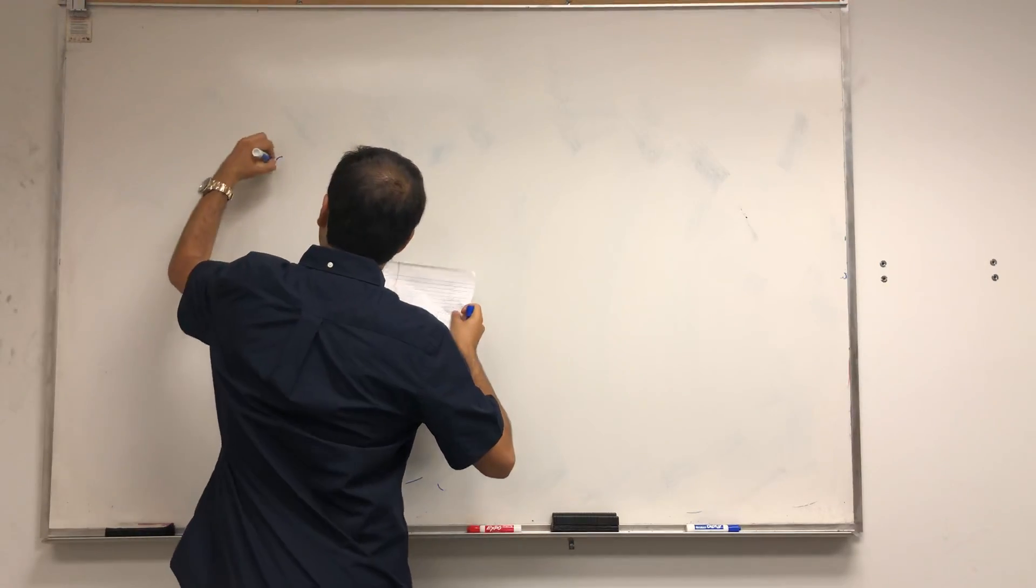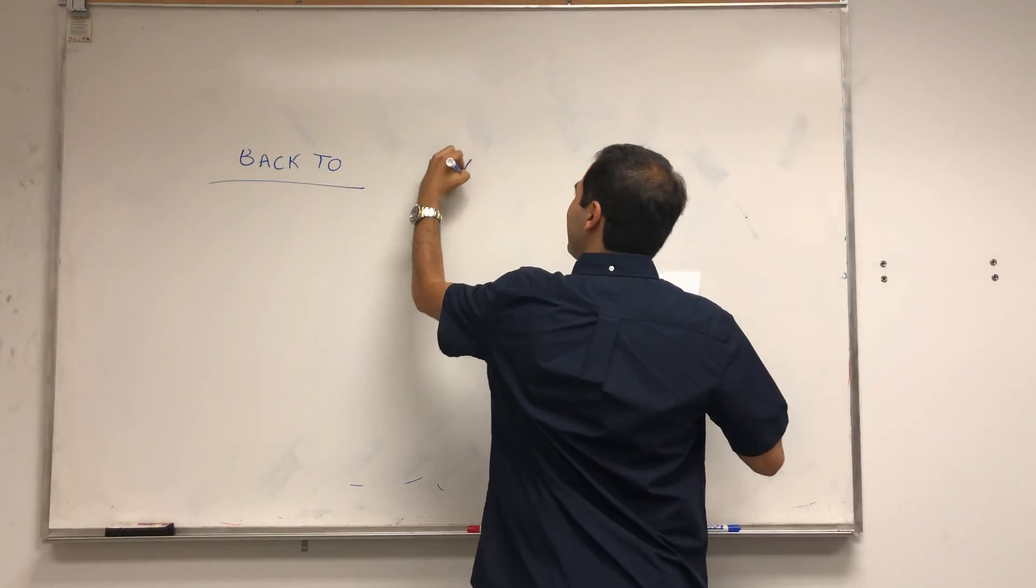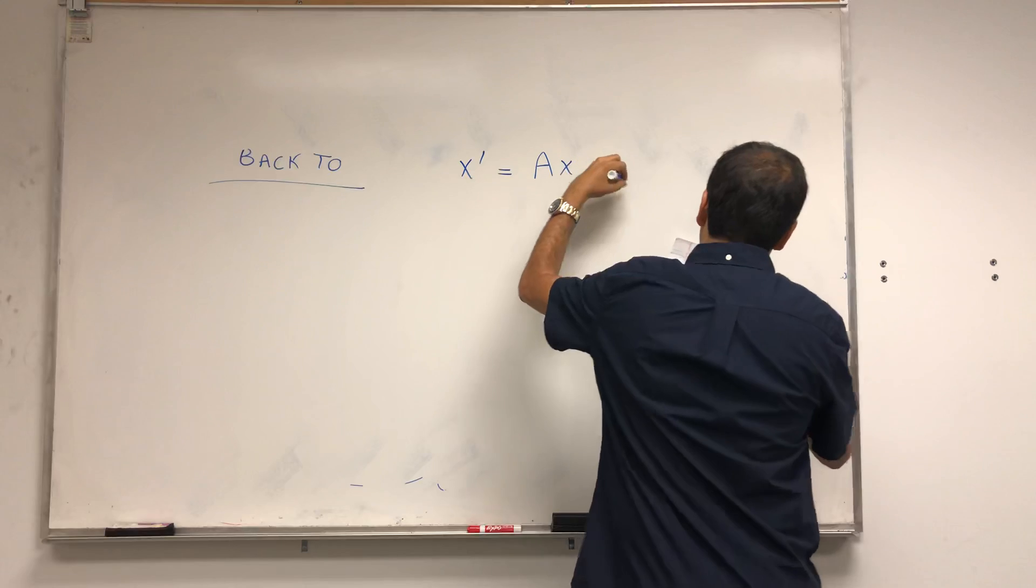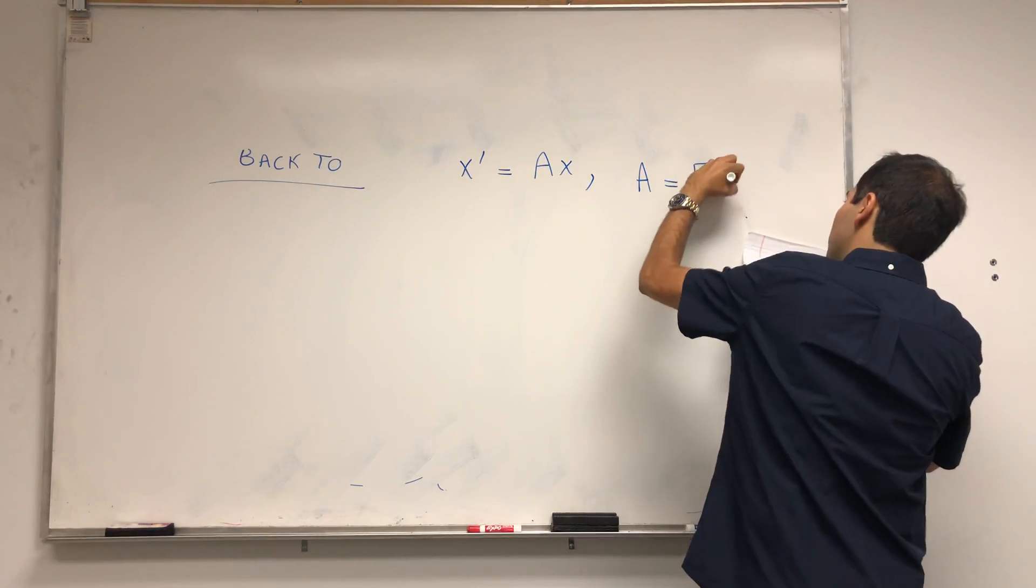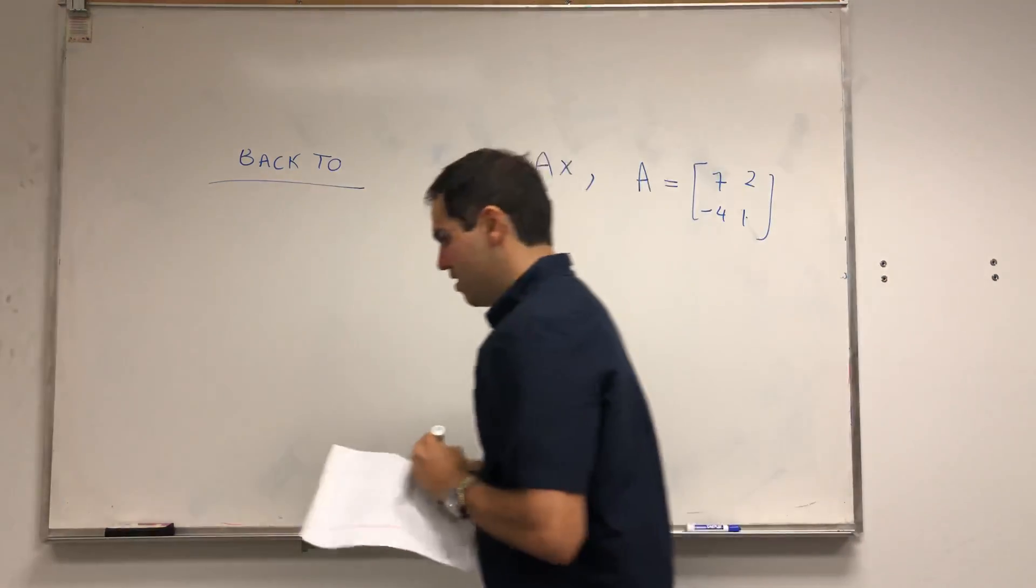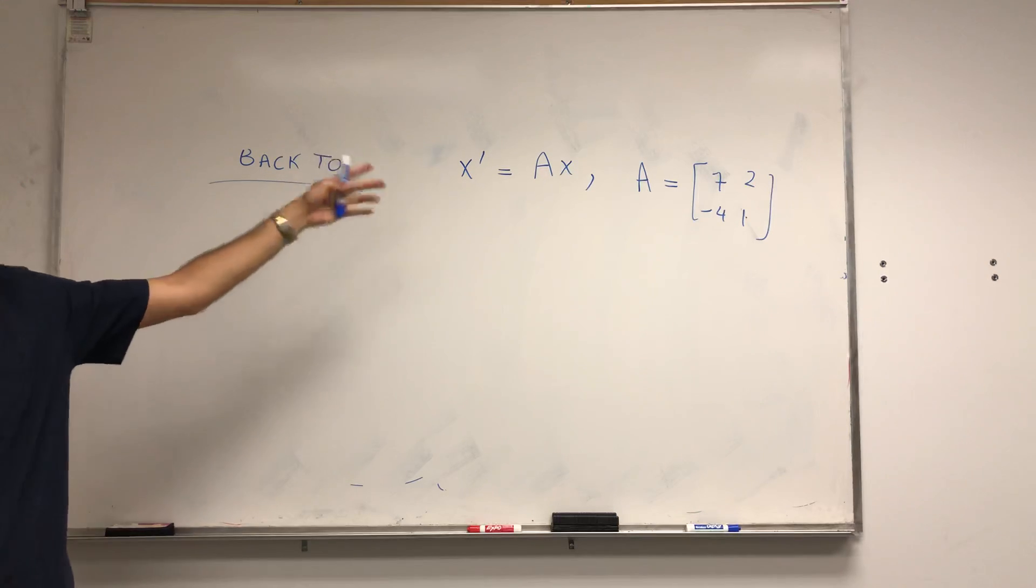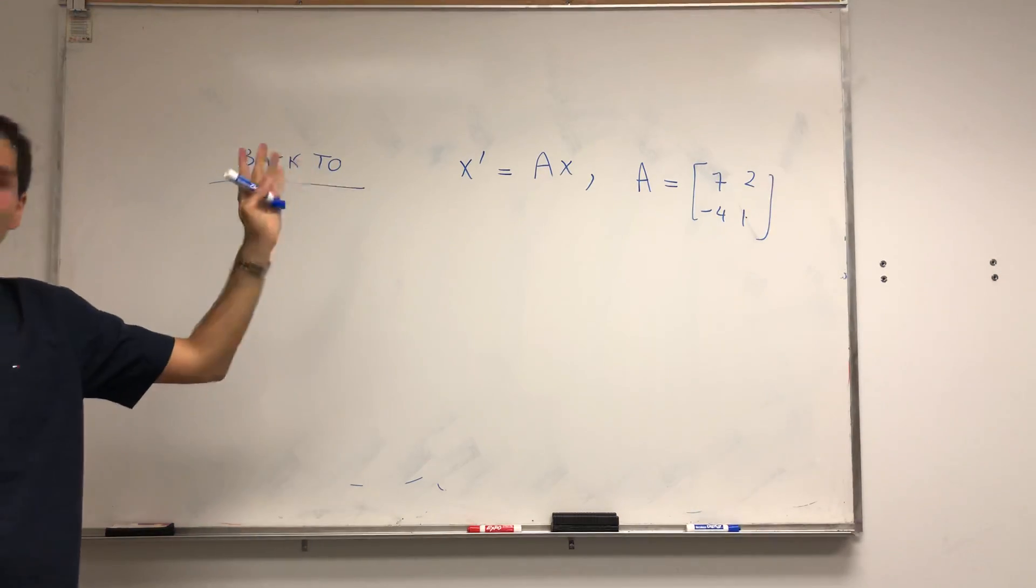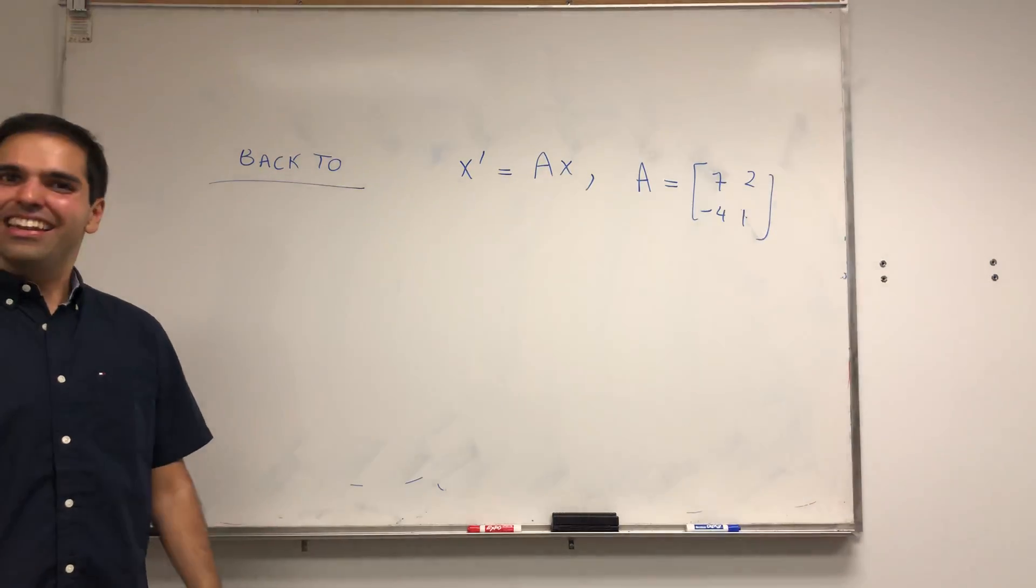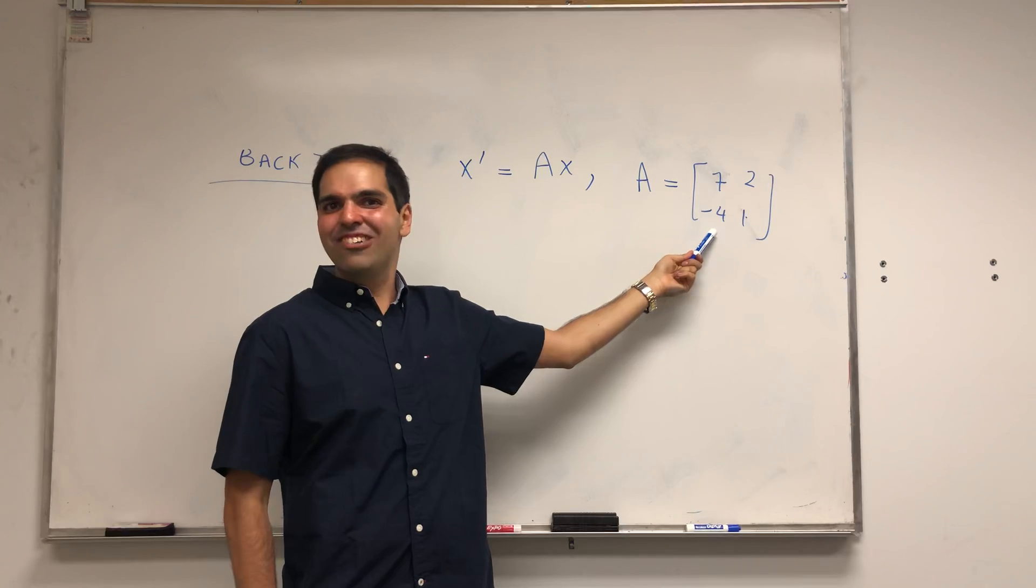Back to the future—I love that movie. Okay, back to x prime equals Ax, where A is [7, 2; -4, 1]. Remember the previous example: if your matrix were diagonal, we can actually solve this easily. Man, if only there was a way to turn this into a diagonal matrix.